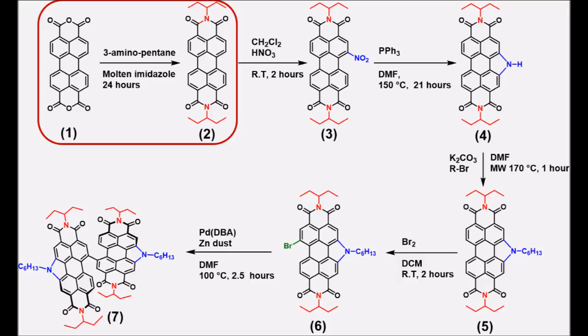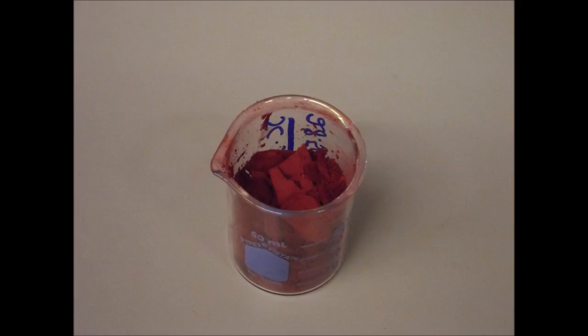In this video, we will be alkylating perylene dianhydride using ethylpropyl amine to form ethylpropyl PDI. Ethylpropyl PDI is a very useful red dye that is often used as the starting point to synthesize PDI-based materials.